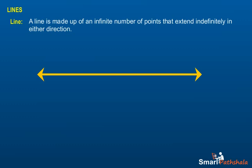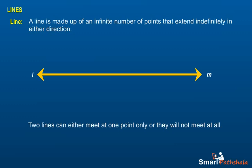Six, sometimes a line is denoted by a letter like l or m. Seven, two lines can either meet at one point only or they will not meet at all.